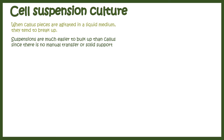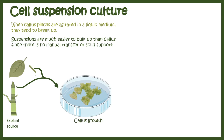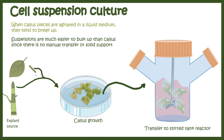A modification of callus culture is cell suspension culture. When callus pieces are agitated in a liquid medium, they dissociate and re-associate in that agitation setting, which improves nutrient supply. Continuous agitation ensures nutrients reach even the deep layers of callus, whereas in a stationary solid medium, nutrients may not reach the inner parts, leading to premature death of the callus. The callus is placed in a stirred tank reactor for this process.